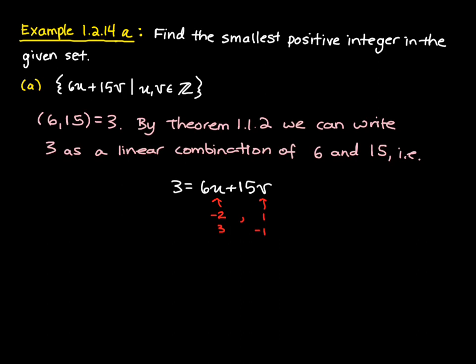From the proof of the last theorem, we know that this element 3 — the greatest common divisor — is going to be the least element of this set.